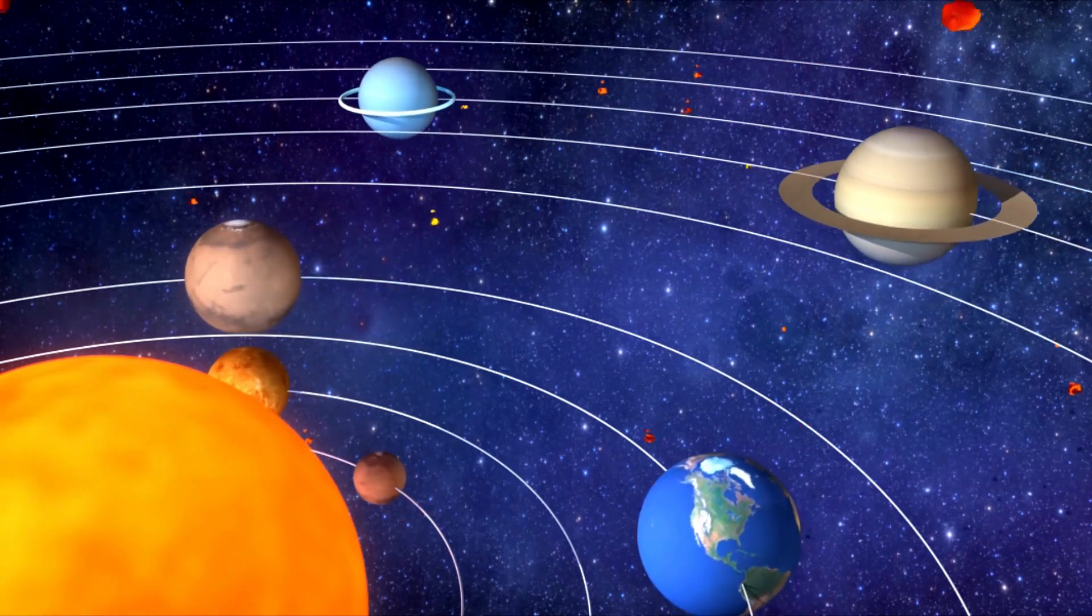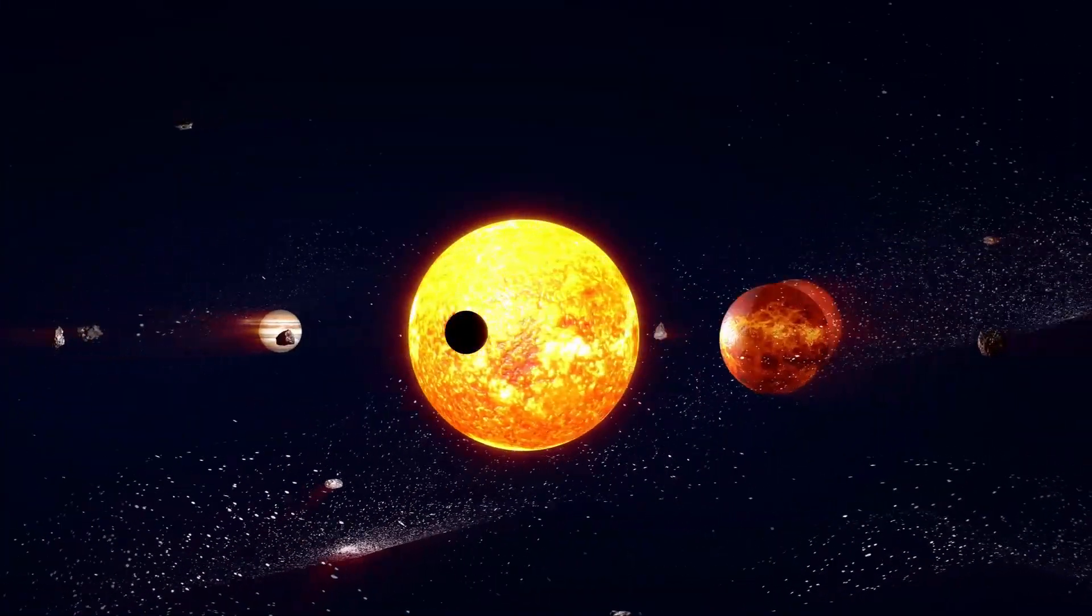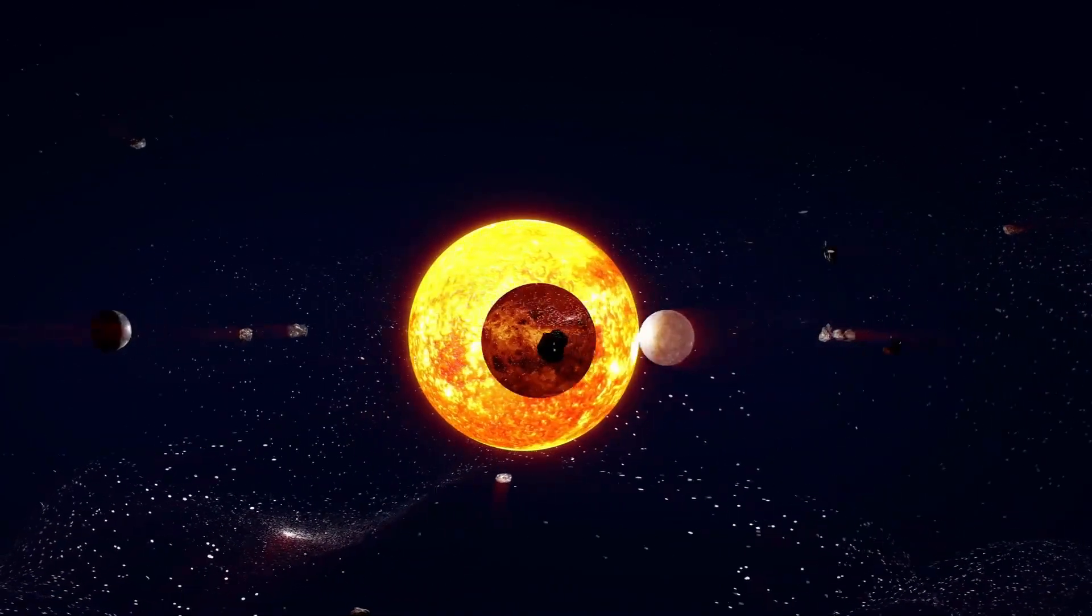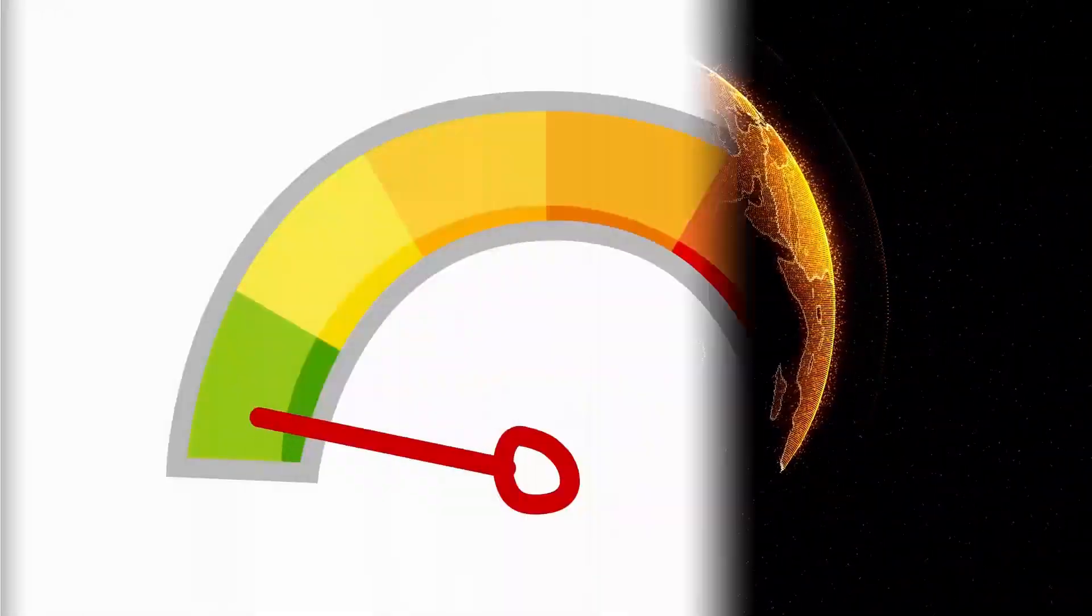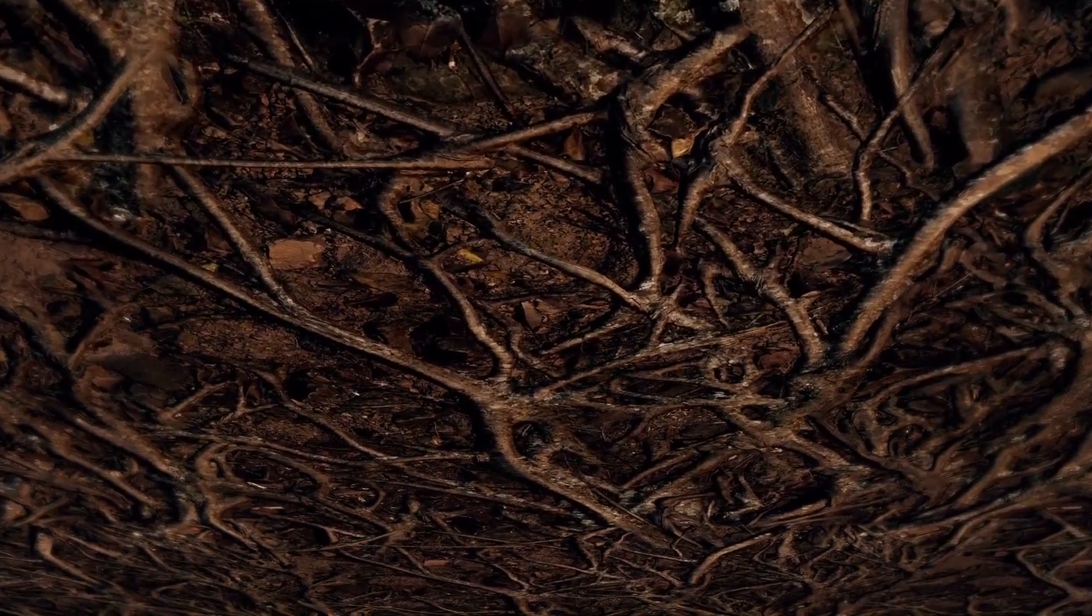It's theoretically possible for it to rain diamonds on other planets, but this would require specific conditions to be present. On Earth, diamonds are formed under high-pressure and temperature conditions, and they're typically found deep underground.